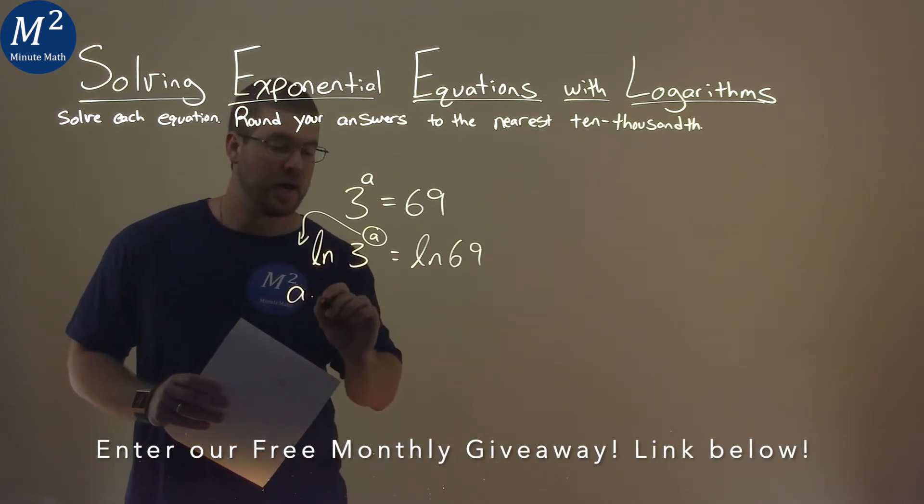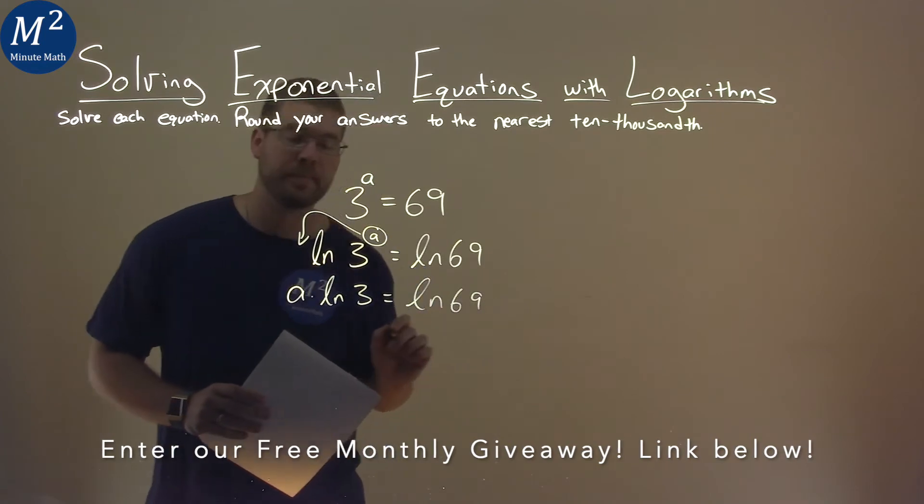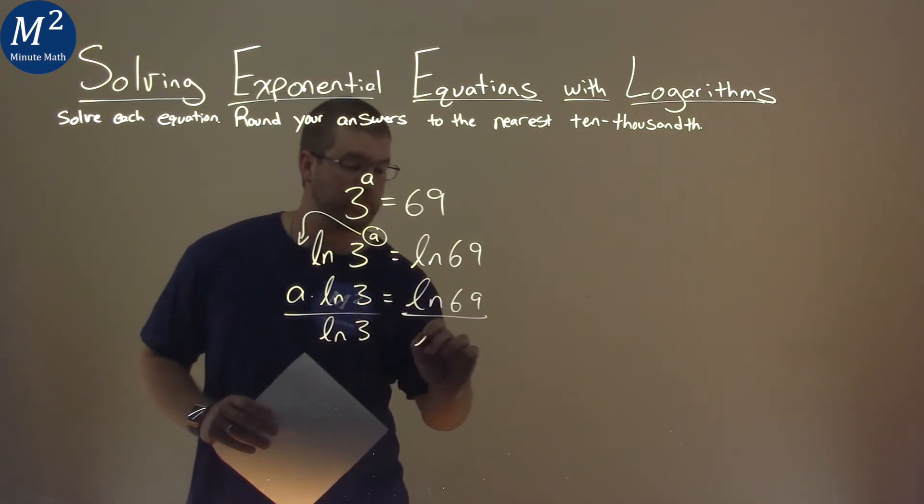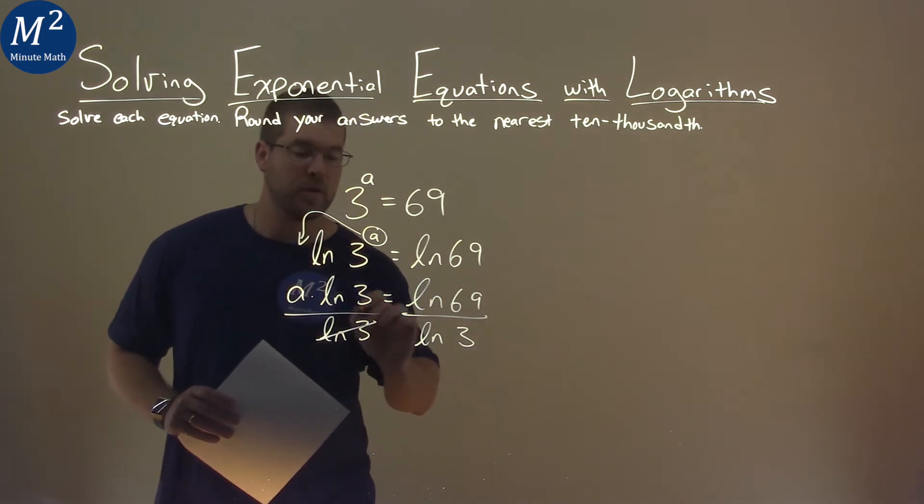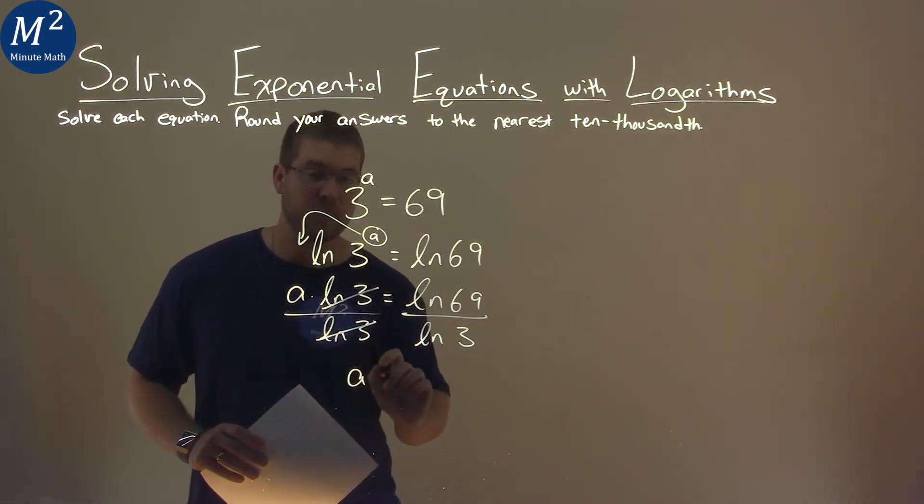That gives us a times natural log of 3, which is equal to natural log of 69. From there, divide both sides by natural log of 3. Natural log of 3 cancels on the left-hand side, giving us a by itself.